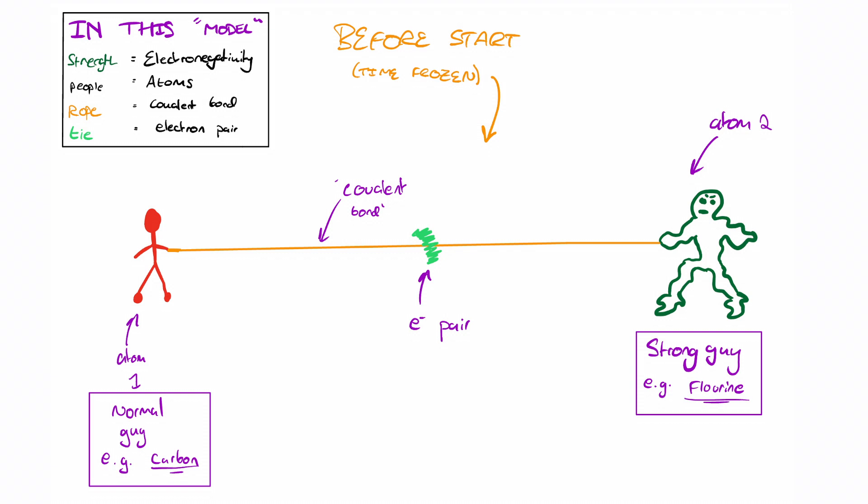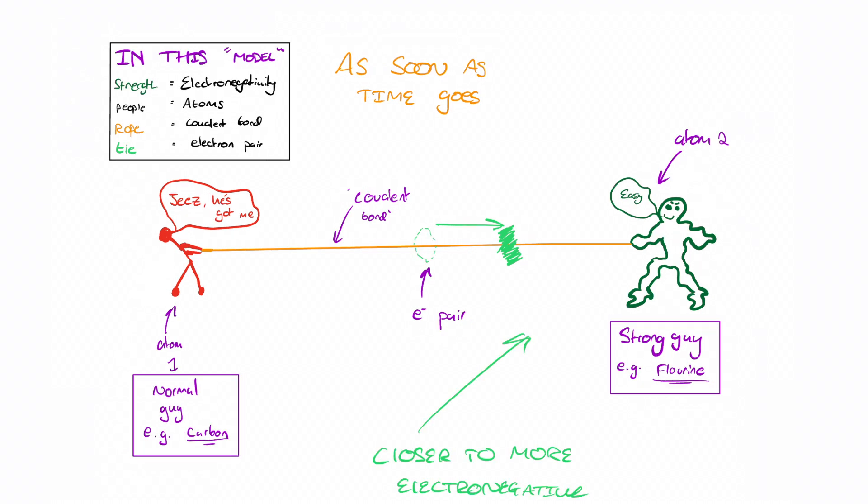As soon as we take this from a static situation and they start pulling, the more electronegative atom is going to pull the electrons closer. In other words, the stronger guy is going to pull the tie closer to him. And if you think about that in terms of atoms, it means something like this happens.